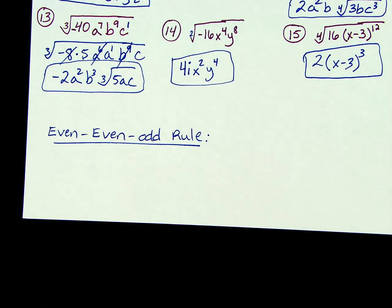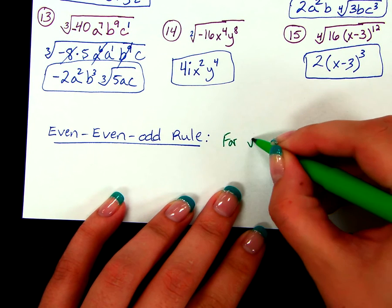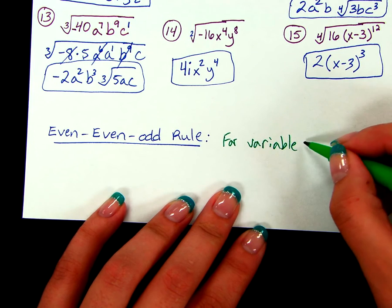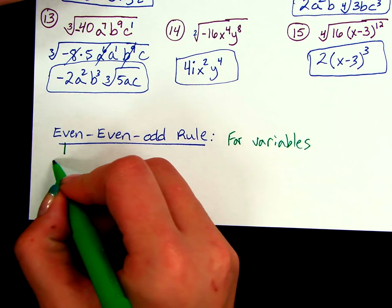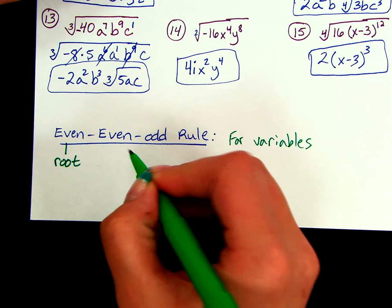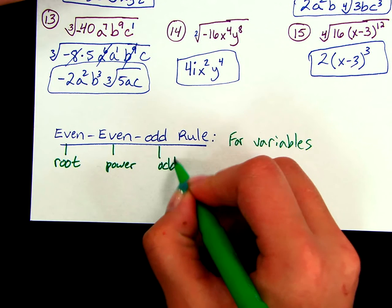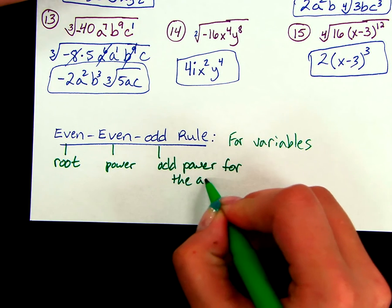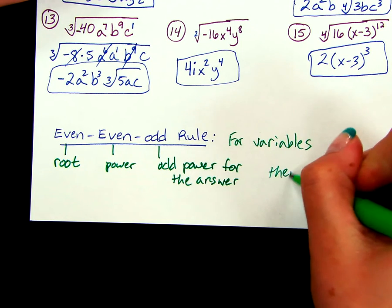Alright, the last part of this section, we are going to talk about the even-even-odd rule. Now this is for variables only. So if we have just a number, then we don't need to worry about this rule. Now, the first even is talking about the root. So if we have an even root of an even power, and we have an odd power for the answer, then we need absolute value symbols.